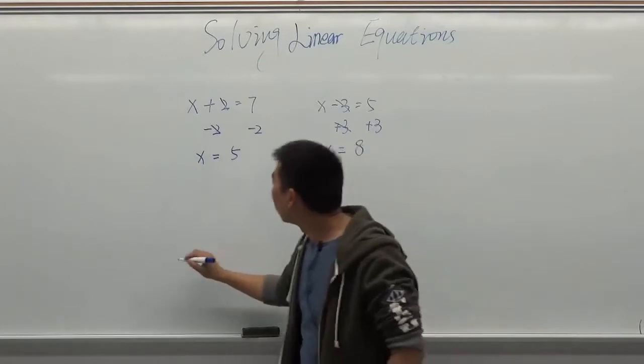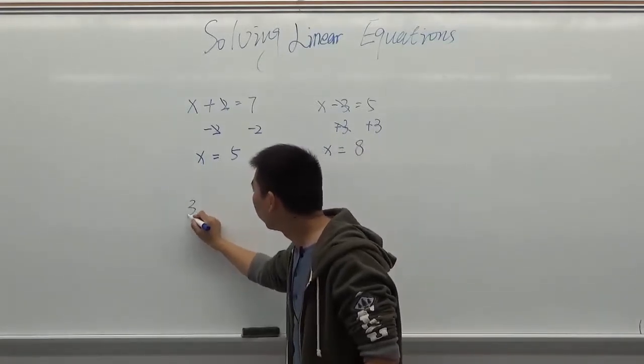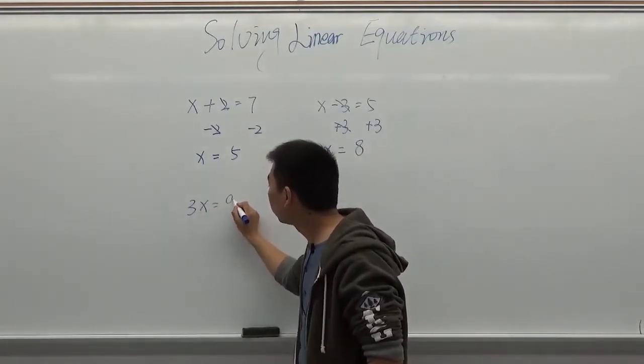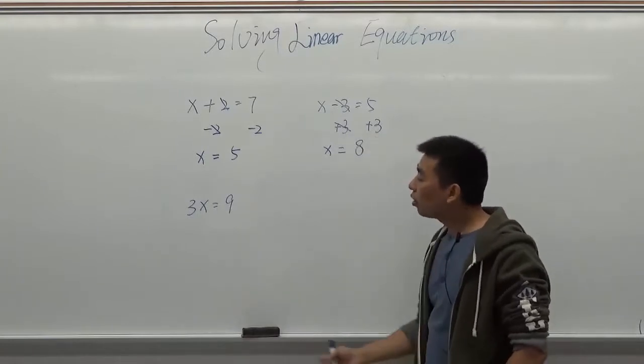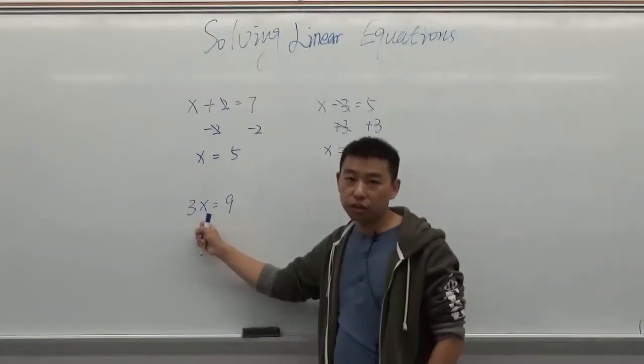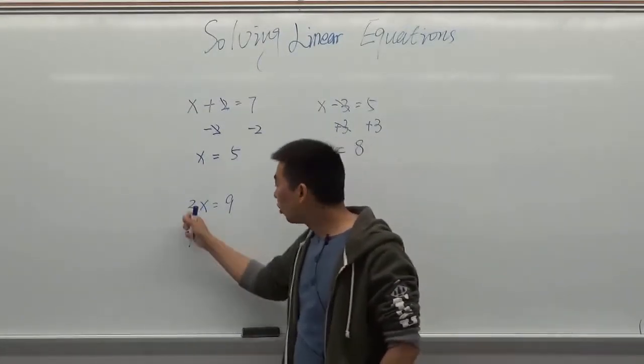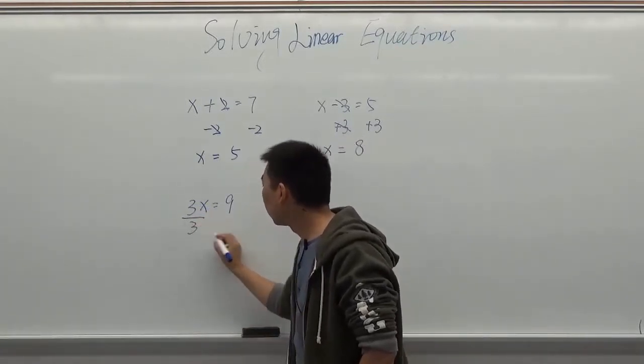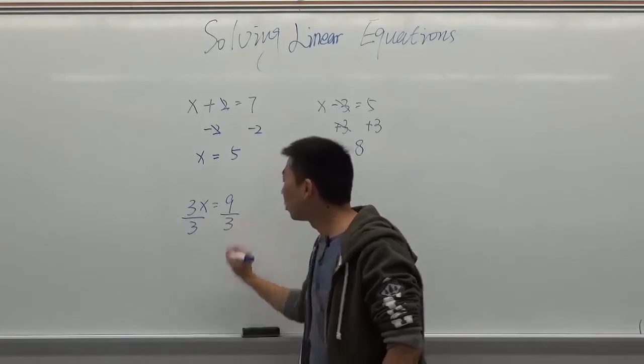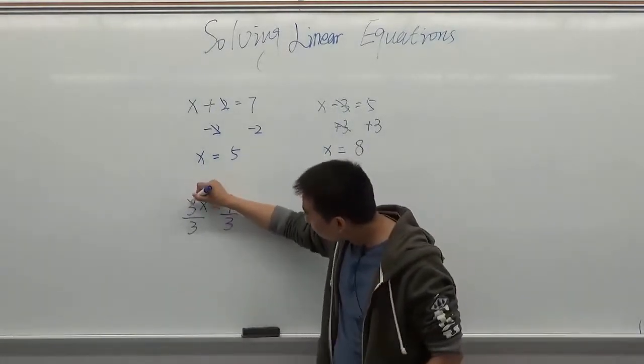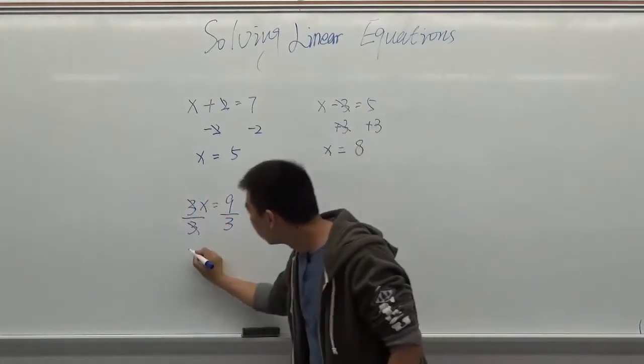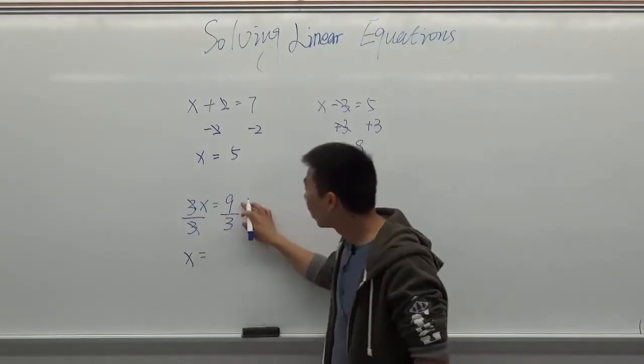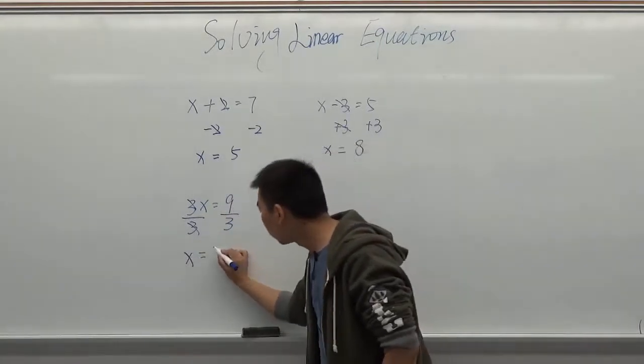Then we have multiplication here. 3 times x equals 9. Here is the multiplication. You need to do a division here. So 3 times x, you need to divide it by 3. Divide by 3, same thing here. So 3 and 3 can cancel out. So x equals 9 divided by 3. That gives us 3.